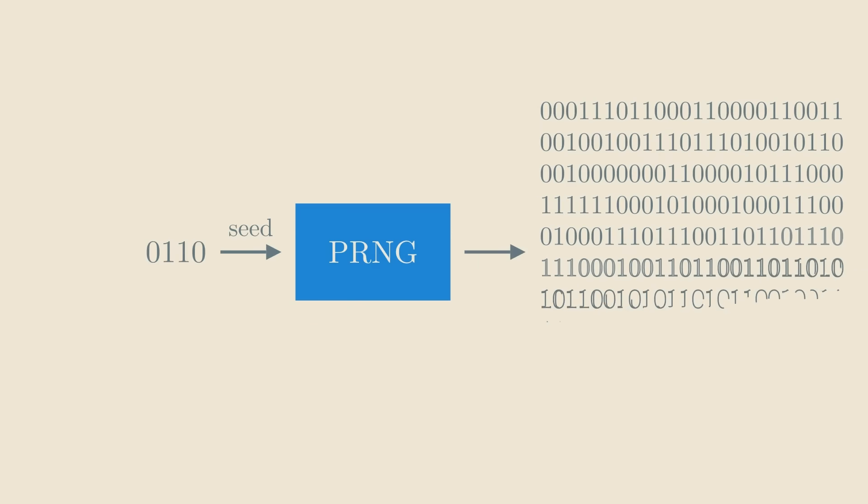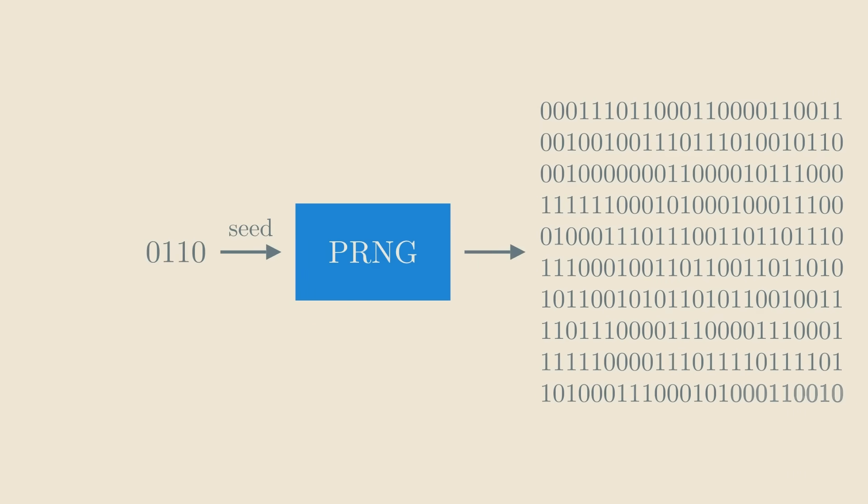This is a function that applies complicated transformations to an initial seed value. This way, it produces a sequence of bits that looks totally random, even though it's a deterministic function of the seed.